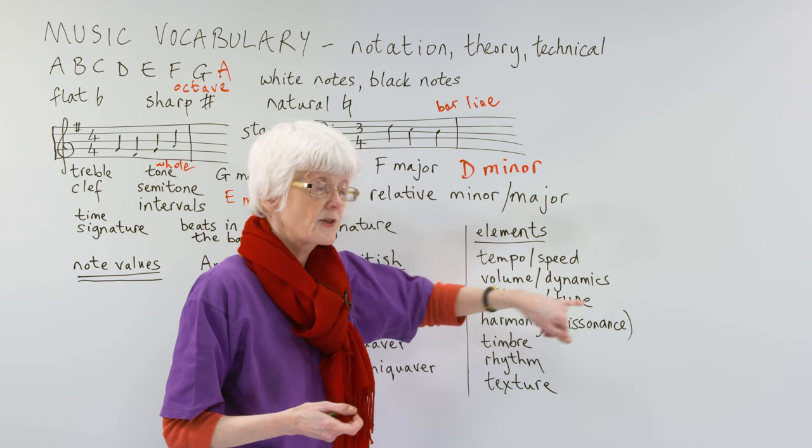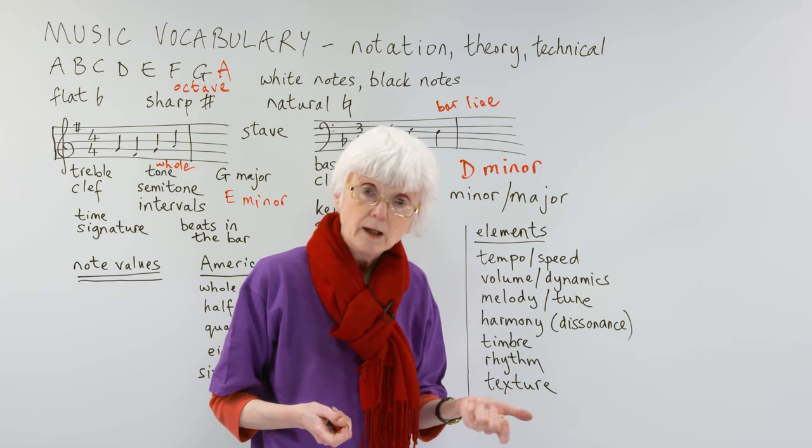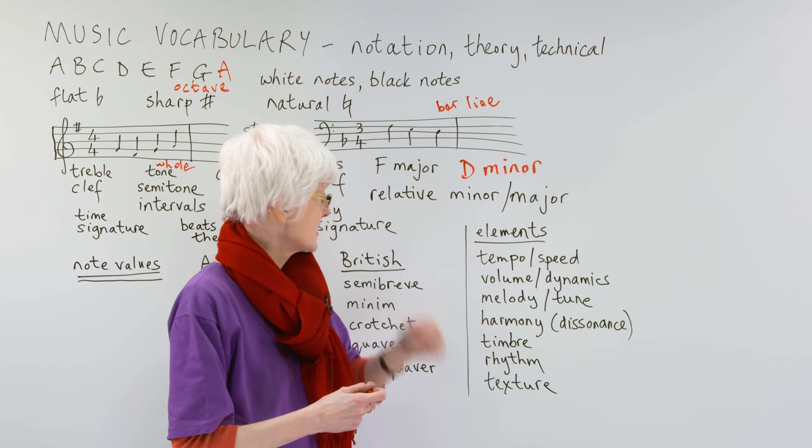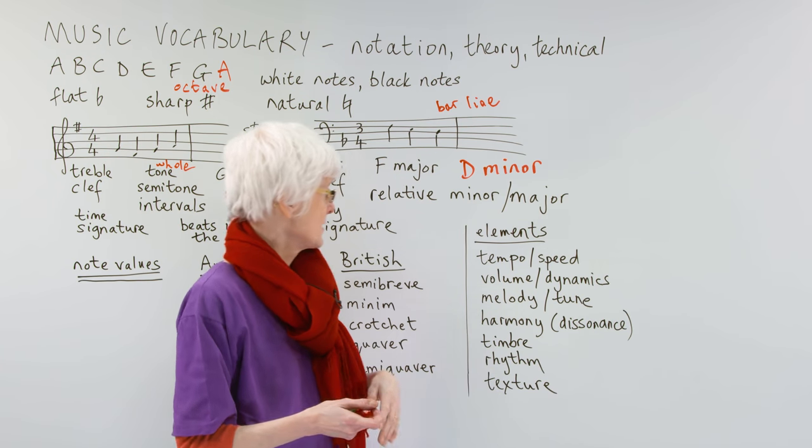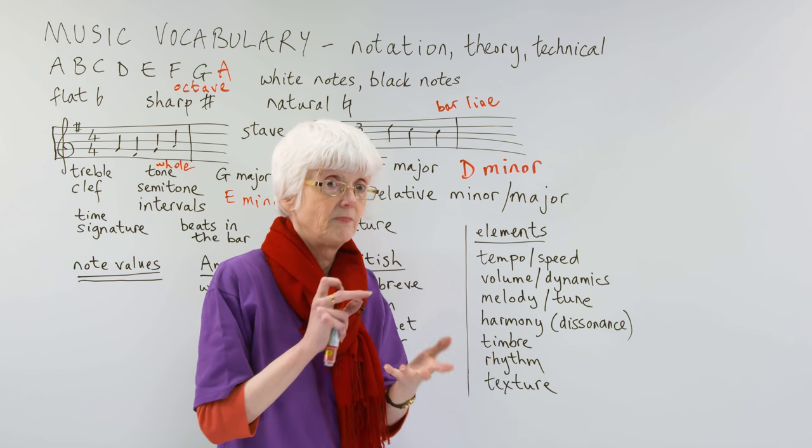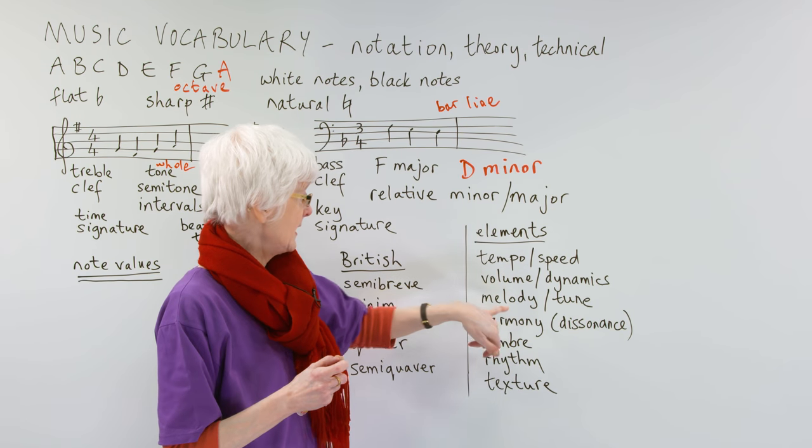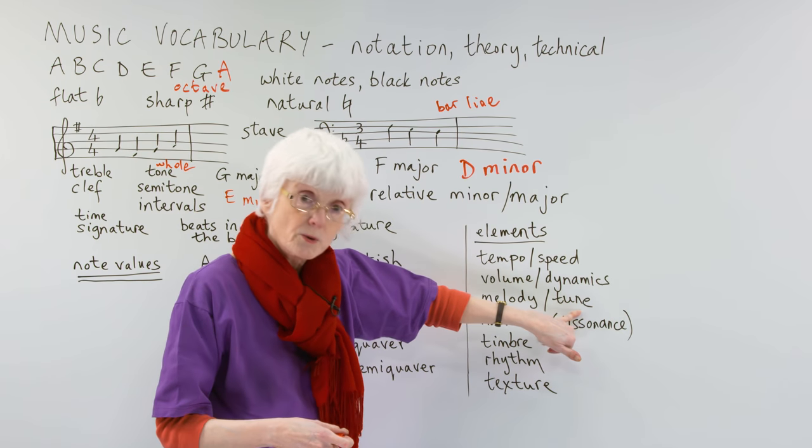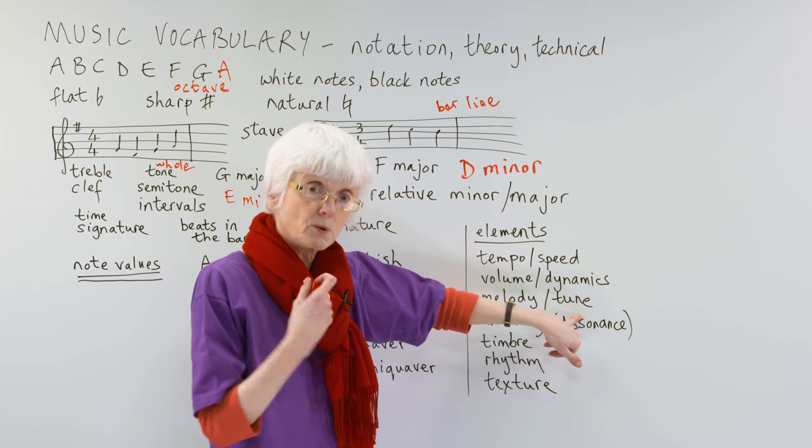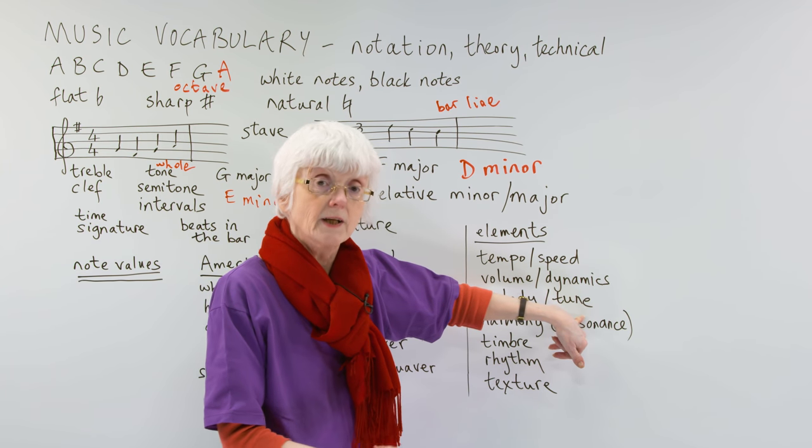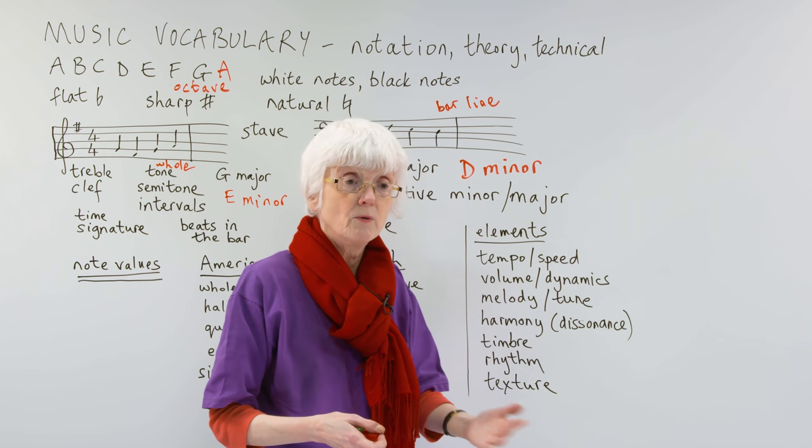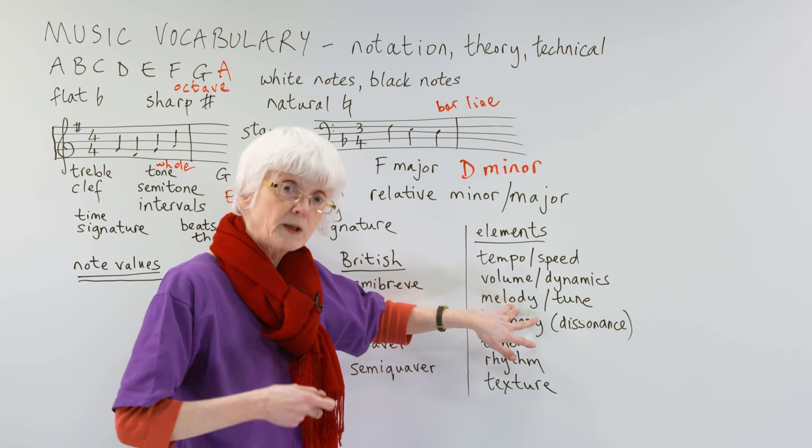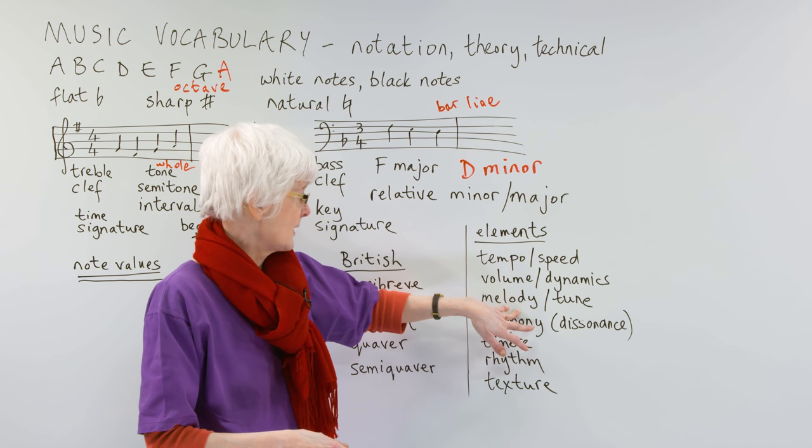Volume or dynamics is to do with how loud or soft it is. It's the volume, the dynamics, is it loud or soft, or average in between. Another element, of course, very important is the melody or tune. The tune, the word tune is a more popular word that everybody uses. They say oh that's a lovely tune, what's that? But the more technical musical word for it is melody.